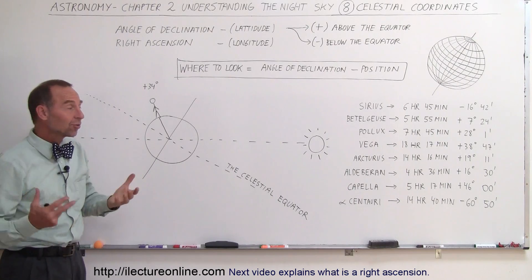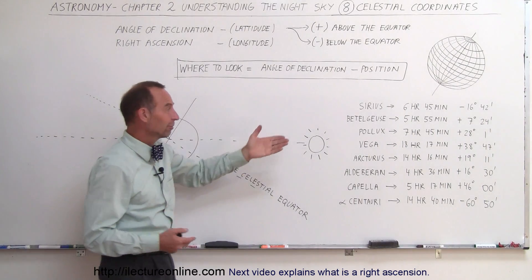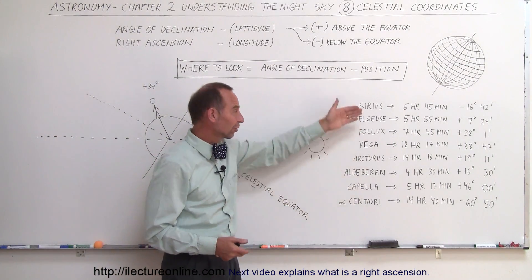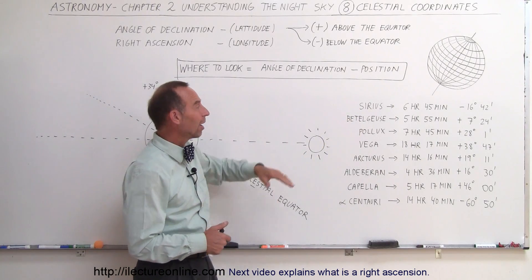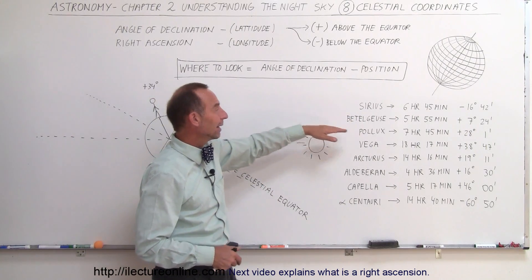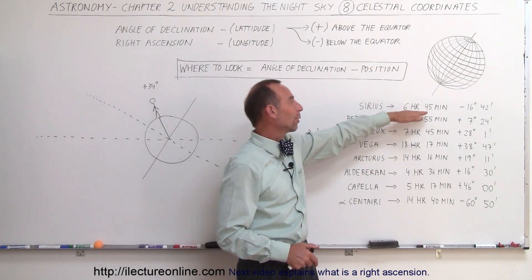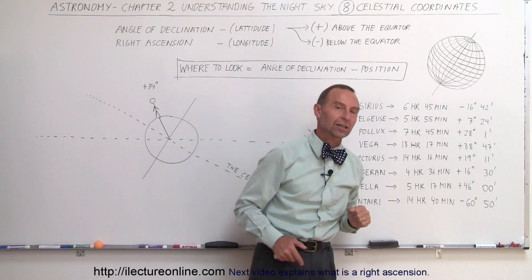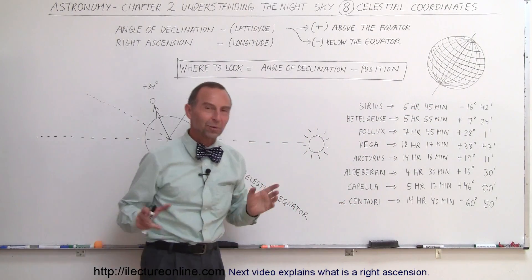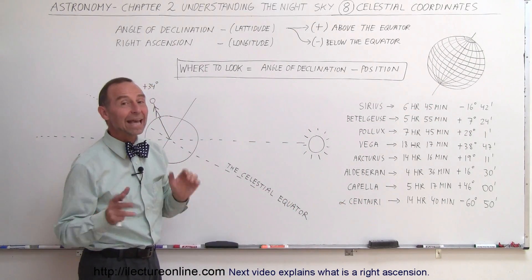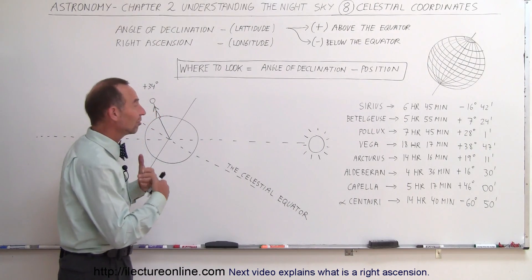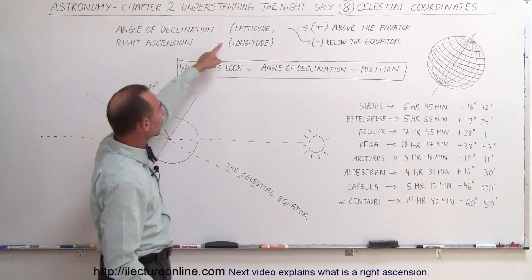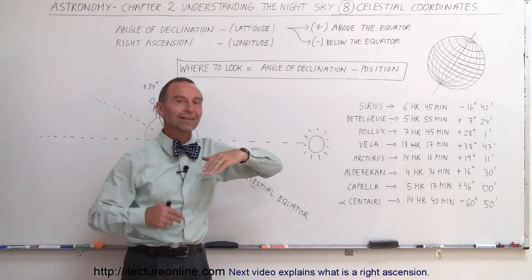Most objects in the universe, such as famous and bright stars — Sirius, Betelgeuse, Pollux, and so forth — are indicated by their position at some right ascension and some angle of declination. We're going to start with the easy one: the angle of declination. It is very similar to, in the Earth's coordinate system, the latitude on the Earth.